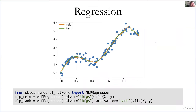Neural networks can also be used for regression via the MLP regressor. For small datasets use LBFGS; for large datasets use Adam, which is the default. With ReLU you get predictions with sharp corners, while tanh gives smooth predictions.